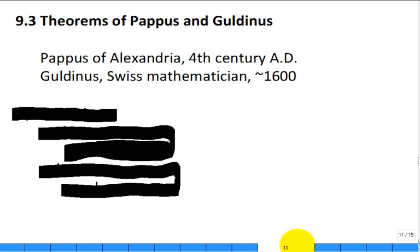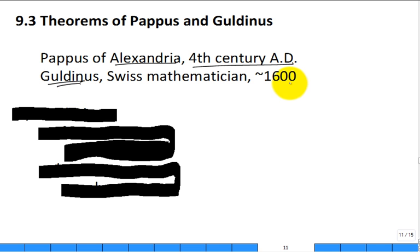Next section: the theorems of Pappus and Guldinus. Pappus was Alexandrian in the fourth century AD, and somebody later looked back and credited him for this. As often happens in science and engineering, things get rediscovered — in the 1600s, a Swiss mathematician named Guldinus basically rediscovered the same thing.